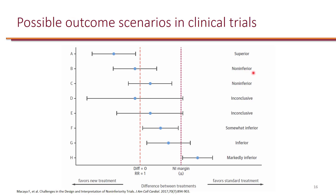When it comes to non-inferiority studies, it's okay to cross the line of no difference, because we're not really trying to show that the intervention is superior to the control group. What we're really interested in is to show that it's not too much worse. And 'too much worse' is defined by the non-inferiority margin — the NI margin, or delta. So instead of the line of no difference, now we're looking at the margin. As long as the confidence interval doesn't cross the delta, we can claim non-inferiority.